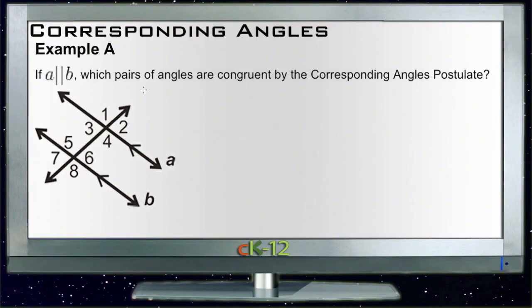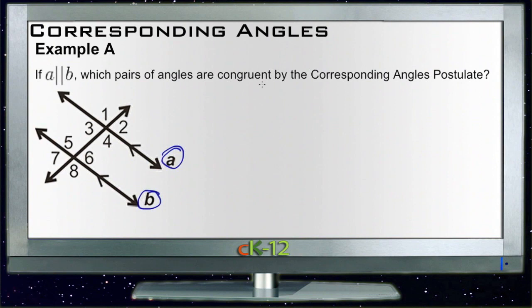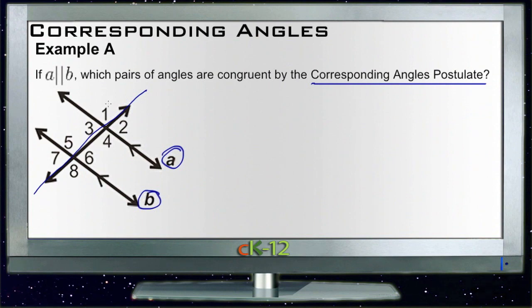Let's take a look at the examples for corresponding angles. Example A says if line a is parallel to line b, which pairs of angles are congruent according to the corresponding angles postulate? The corresponding angles postulate tells us that if two lines are parallel and crossed by a transversal, then any pairs of angles that are in the same position are going to be corresponding and therefore equal.